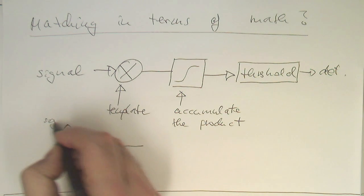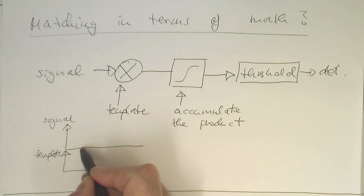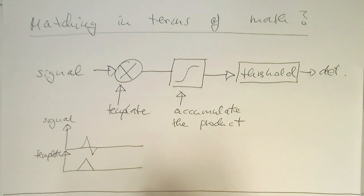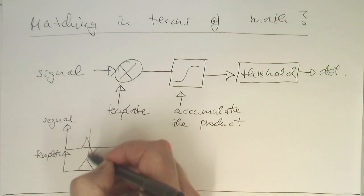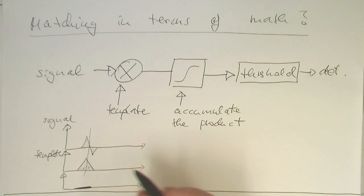So, if this is the template, imagine we have a signal which looks like that. And the template looks like this. Roughly where this here belongs together. Then this part here generates a positive response and this part here generates a negative one. And so, ideally what we see here is that they cancel out. So, we're getting zero response.